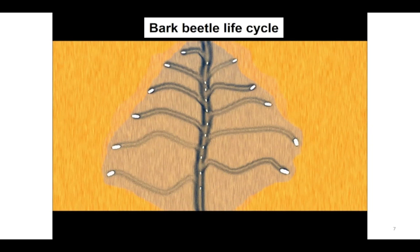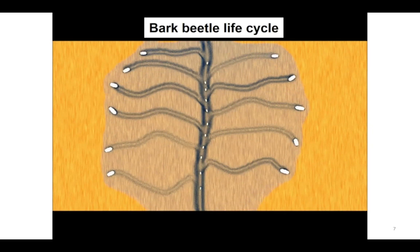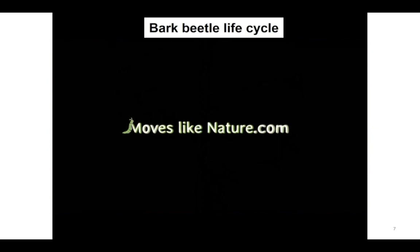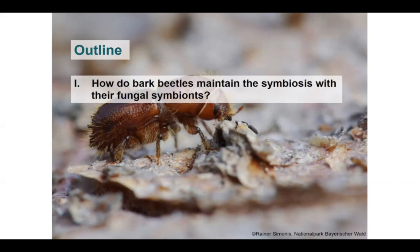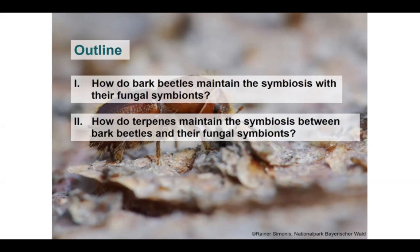After metamorphosis, the immature adults feed intensively on fungi until gaining enough energy to fly to a new host tree. Unlike some ambrosia beetles and few other bark beetles, Ips typographus does not contain glandular mycangia, a specialized organ to harvest and transport spores. Whether beetles with or without mycangia, it is not clear what maintains the association between beetles and fungi. In this talk, I will first address how bark beetles maintain their symbiosis with their fungal symbionts, and later how host tree monoterpenes maintain interactions between bark beetles and their fungal symbionts.